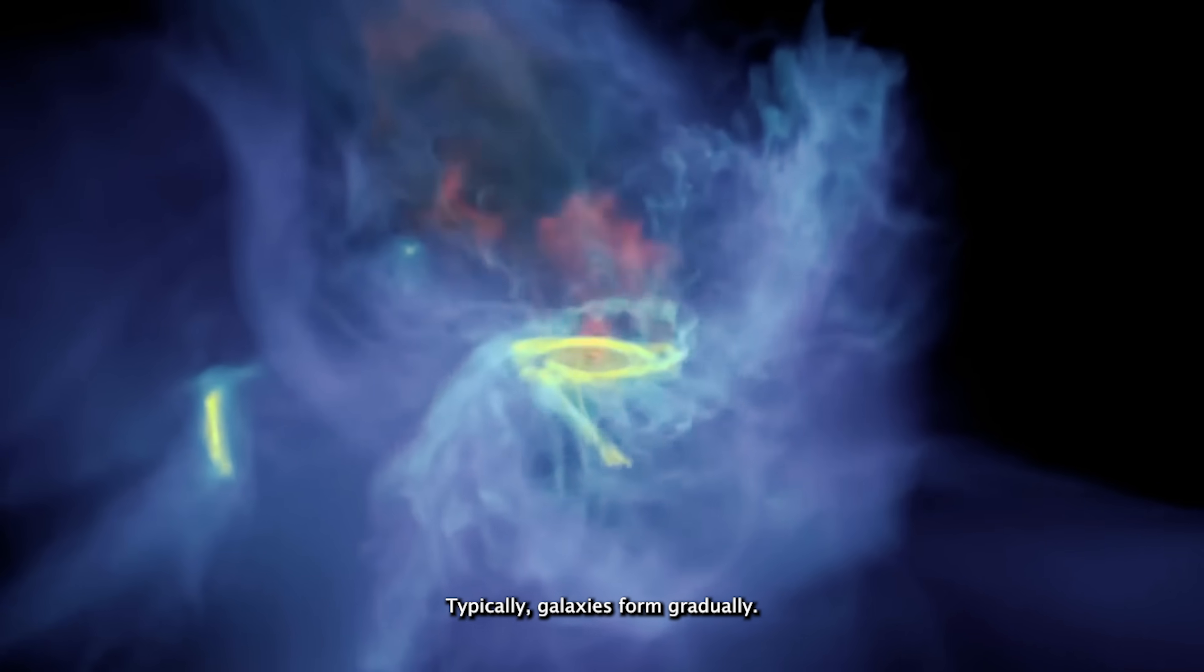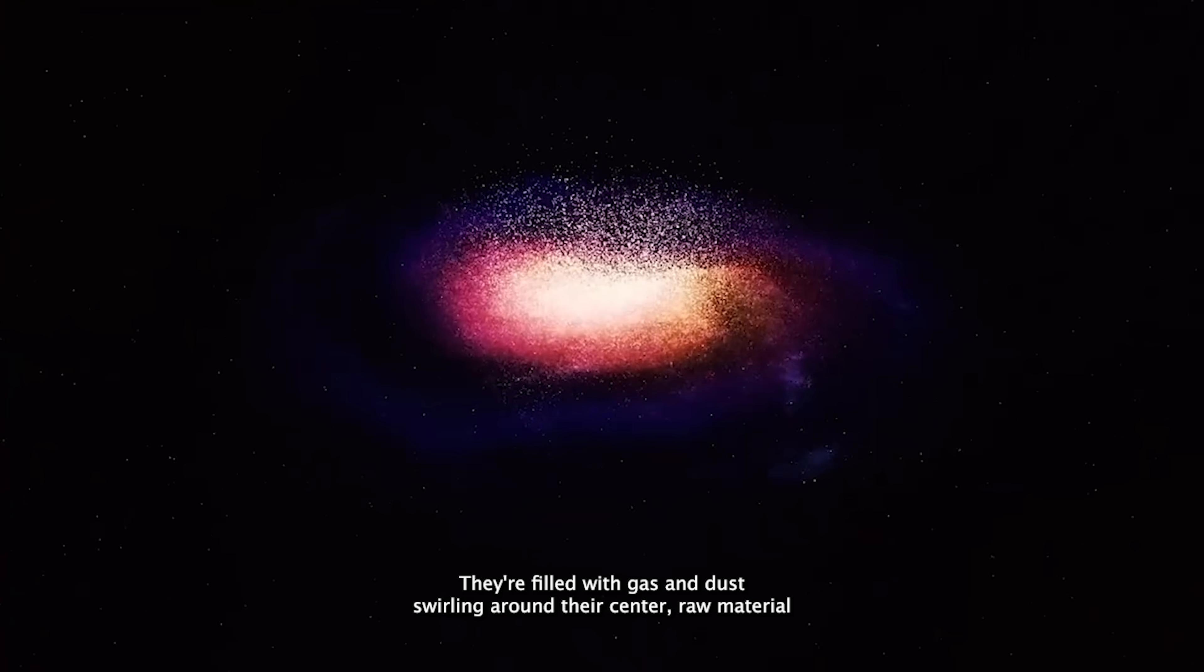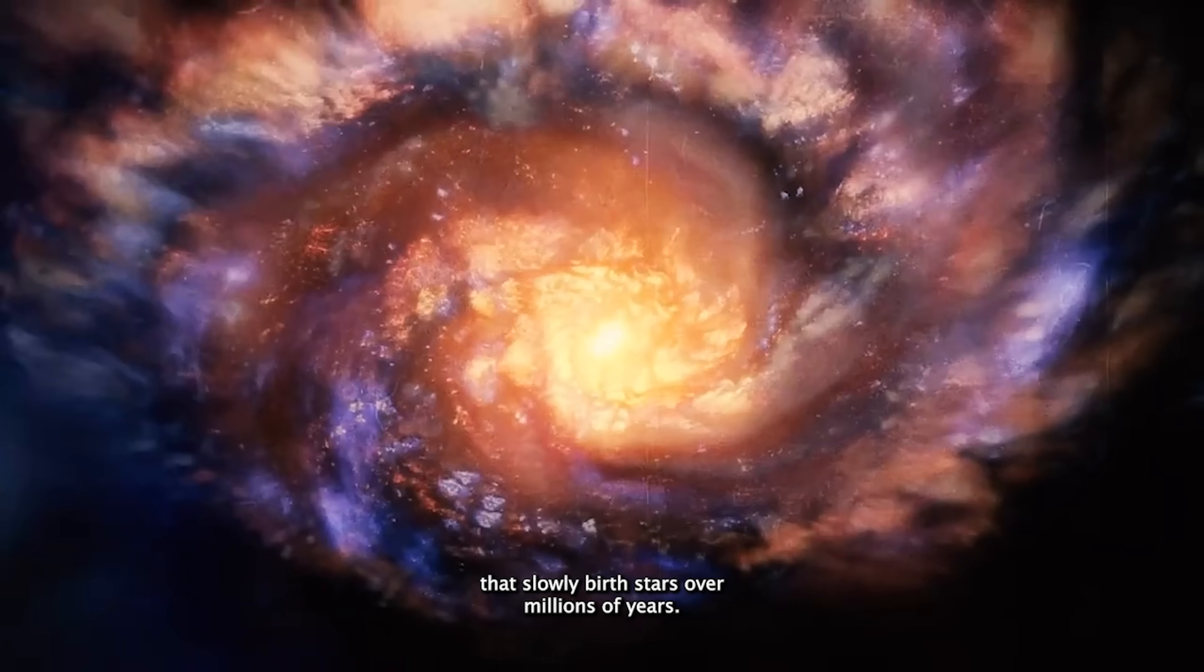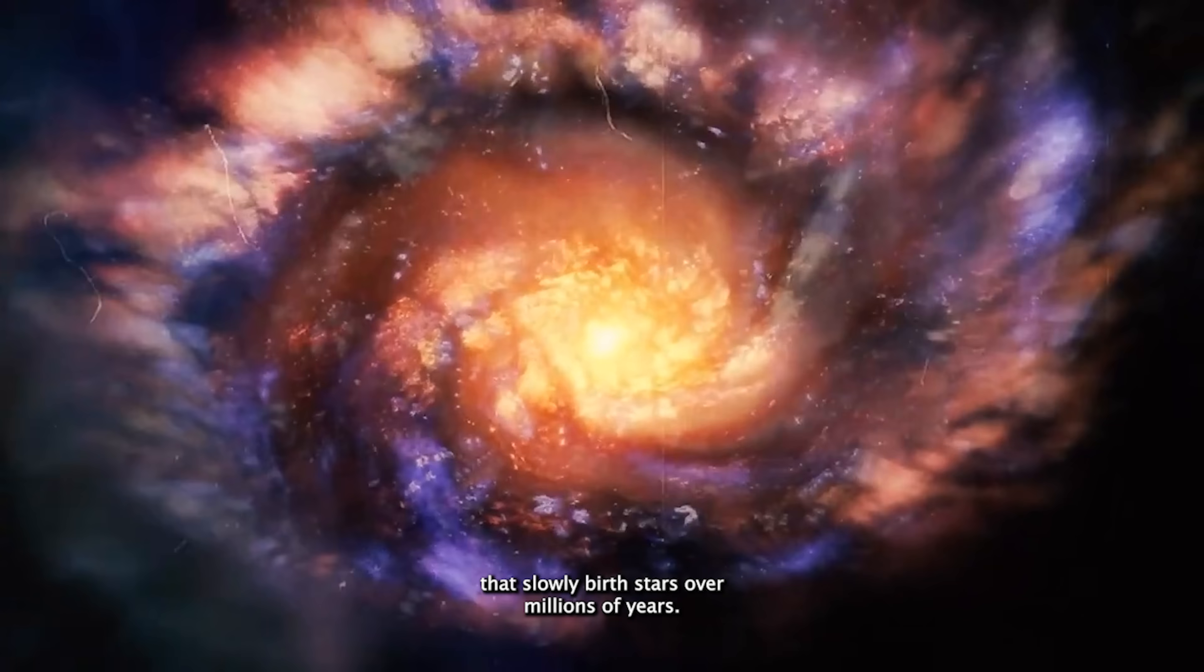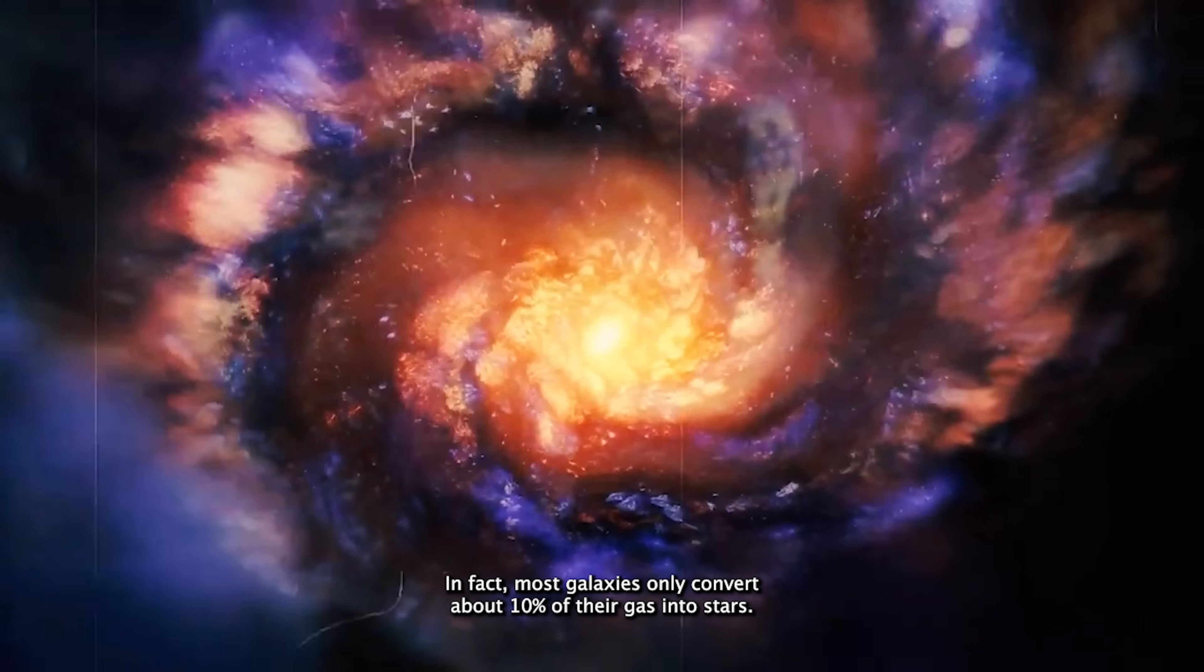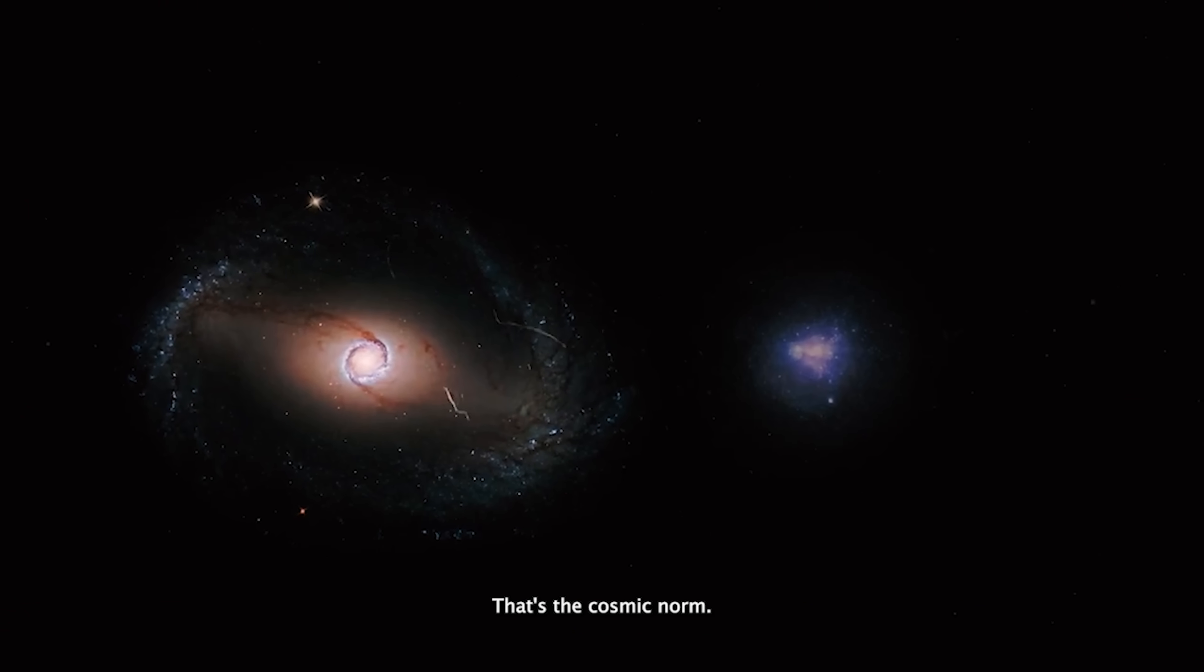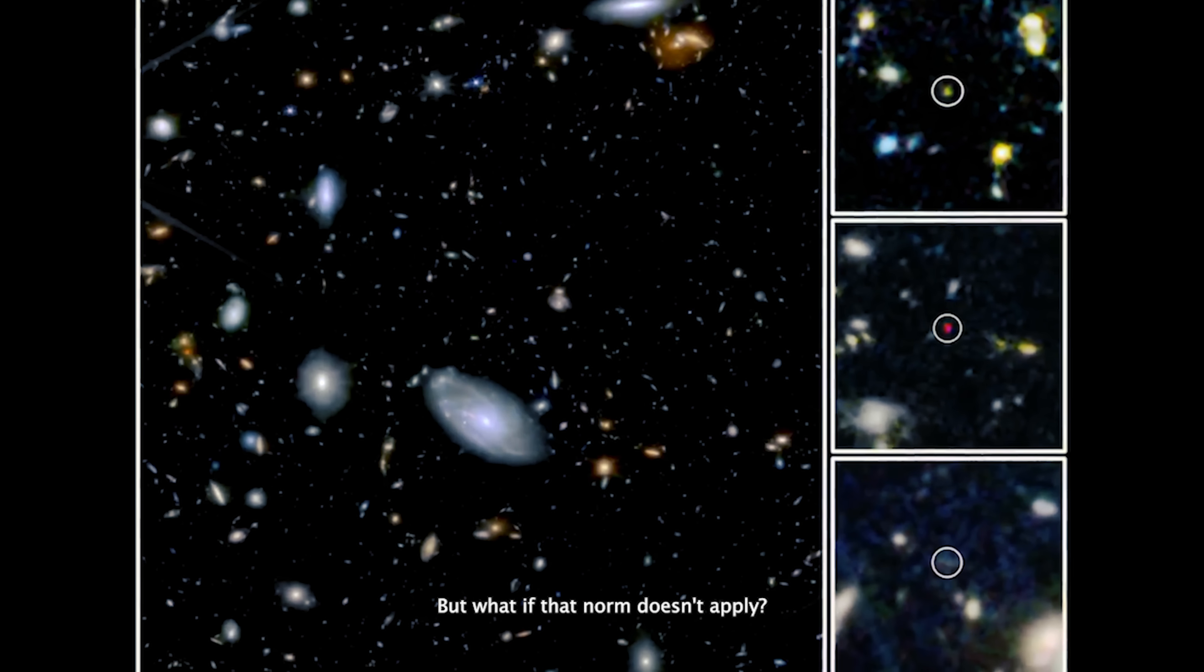Typically, galaxies form gradually. They're filled with gas and dust swirling around their center, raw material that slowly births stars over millions of years. In fact, most galaxies only convert about 10% of their gas into stars. That's the cosmic norm. But what if that norm doesn't apply?